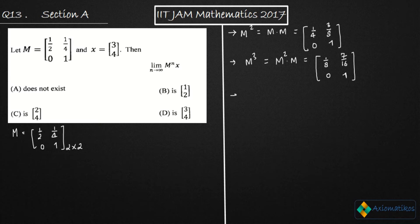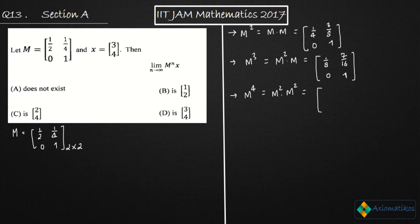My third step is M to the power 4. I can compute M²·M² or M³·M. After multiplying, you get M⁴ = [[1/16, 15/32], [0, 1]].